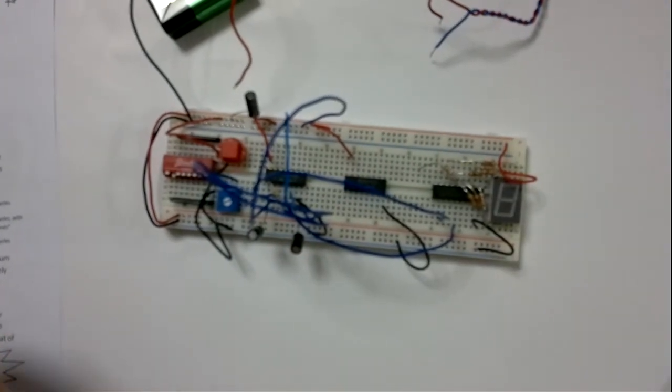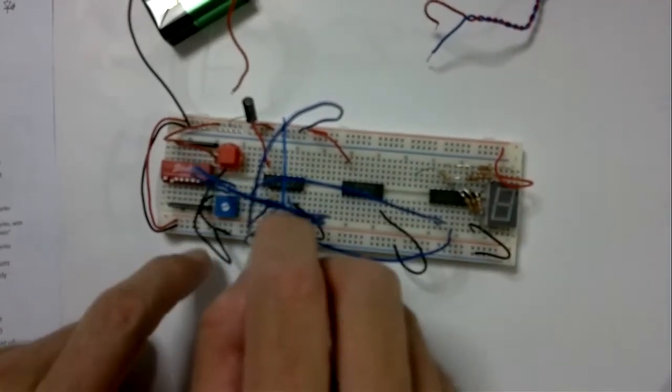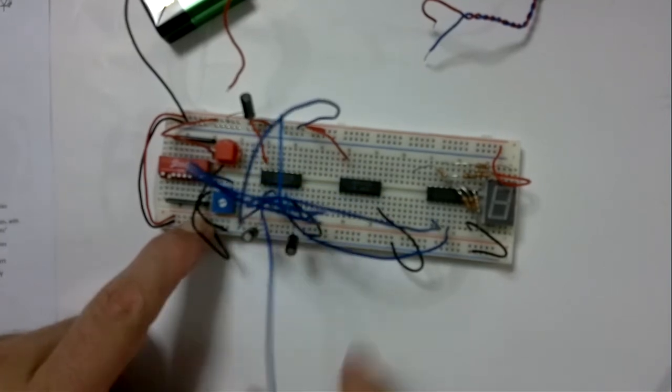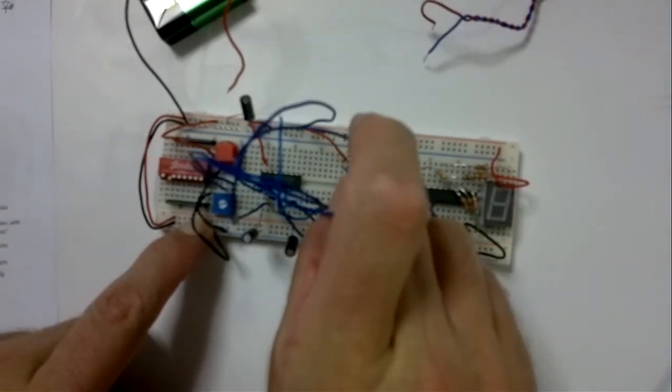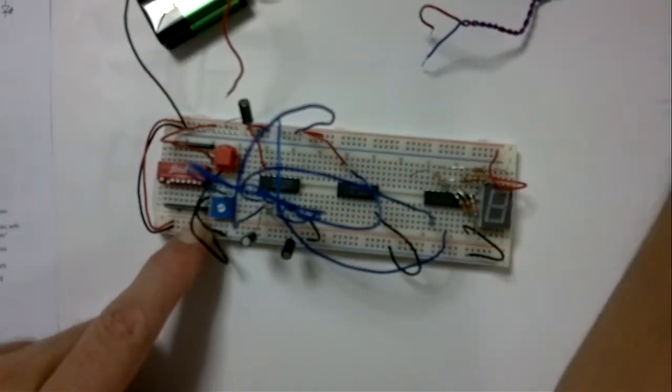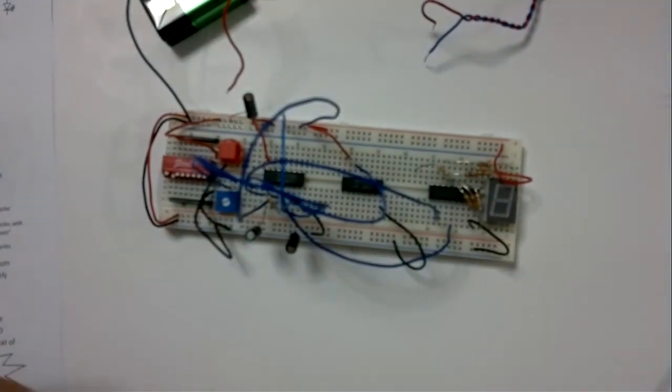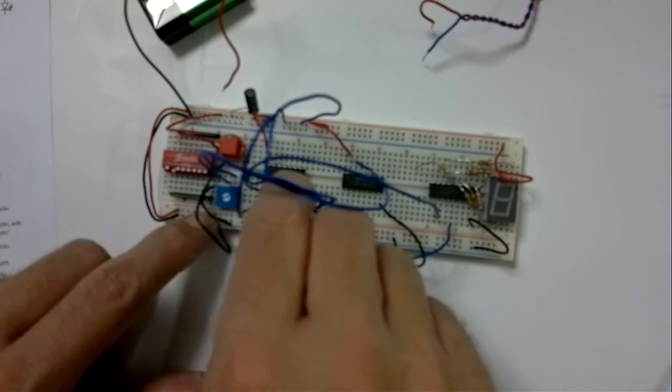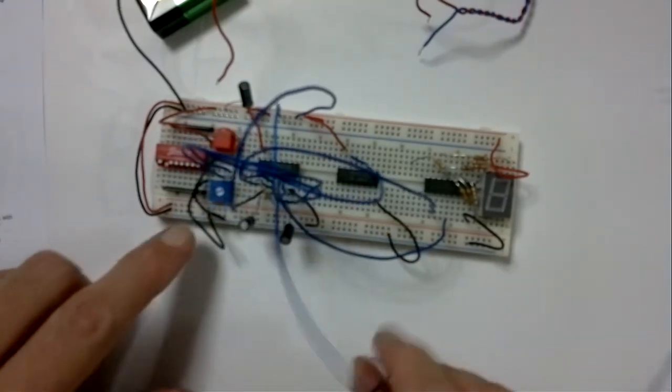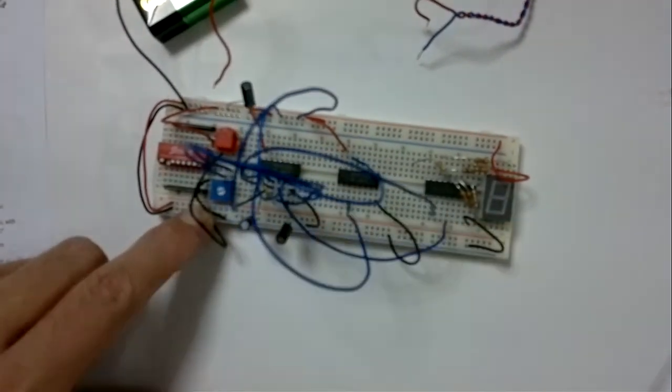So we have the output of one oscillator is going to go to pin 14. Sixteen, fifteen, fourteen. Then we have the output of the other oscillator and that's going to go to pin 3. One, two, three. Just like that.